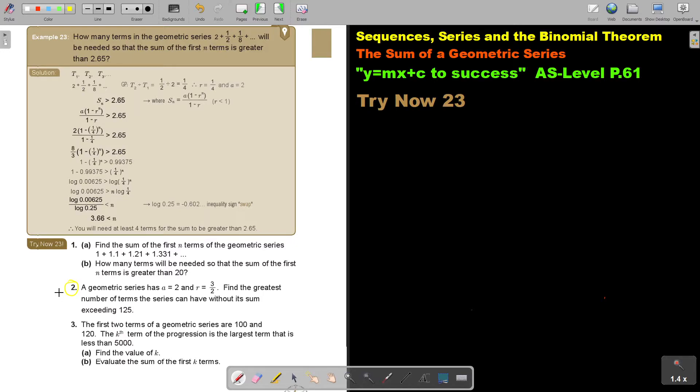Again, you can continue the video as soon as you are finished. Let's start. A geometric series has A equals 2, R equals 3 over 2. So they tell you.